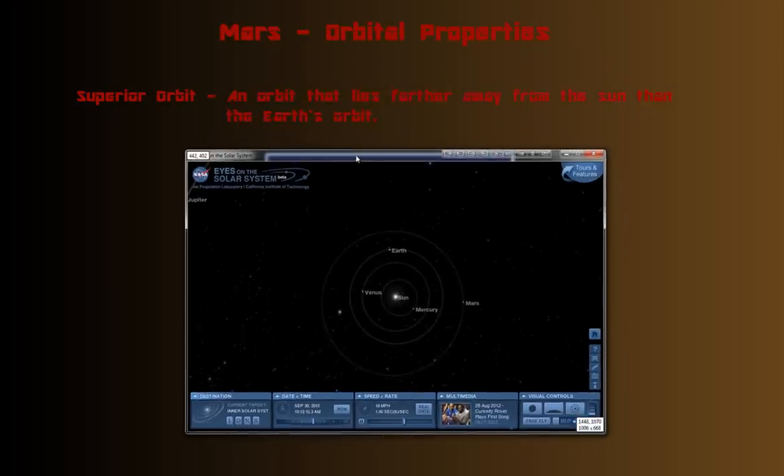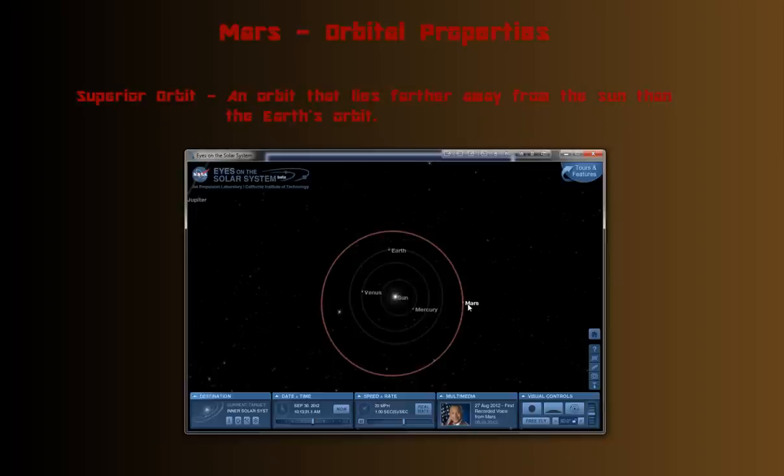Looking at Eyes in the Solar System, I'm just going to call it Eyes from now on. You can see Mars right here in superior orbit, superior position compared to Earth, Earth's orbit, and then the two inferior orbits for Venus and Mercury.